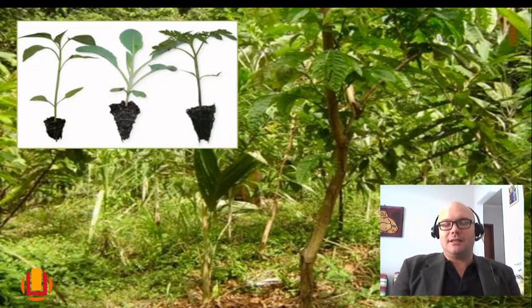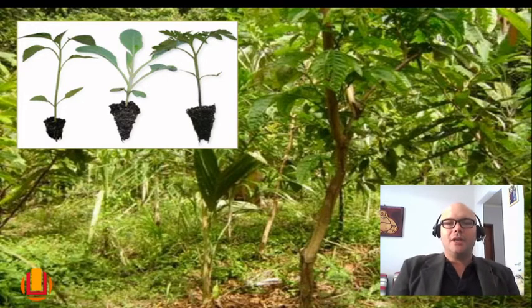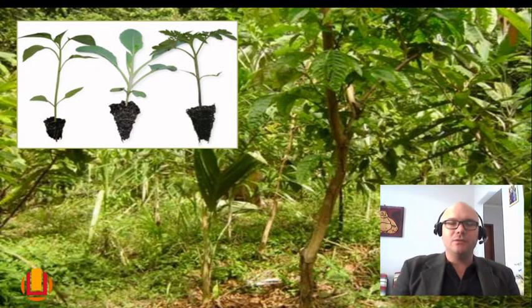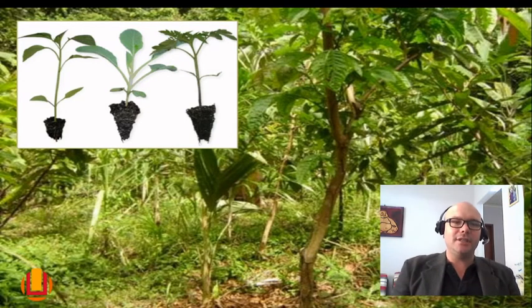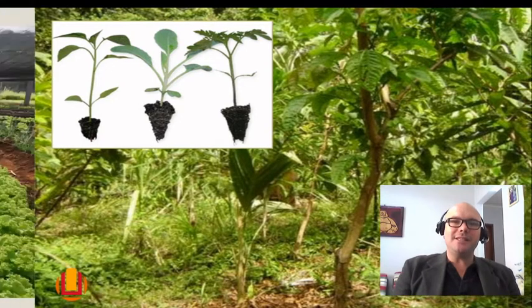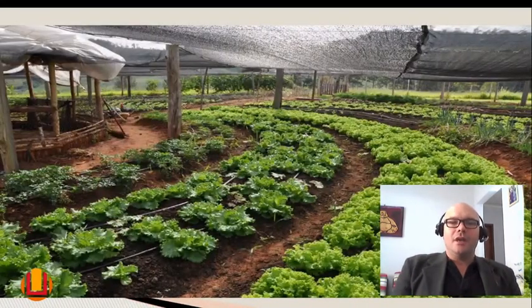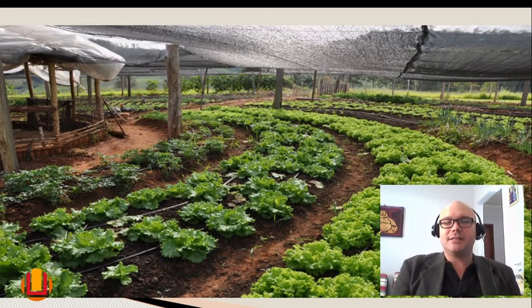A agrofloresta, os sistemas agroflorestais são pequenos ecossistemas que conseguem se autorregular através de controle de mudas, controle de sombreamento, controle de iluminação, para que em determinadas épocas de sazonalidade do ano haja uma produção específica. Essas aqui são técnicas de sombreamento para verduras, para evitar queimas cercadas da floresta de frutíferas.